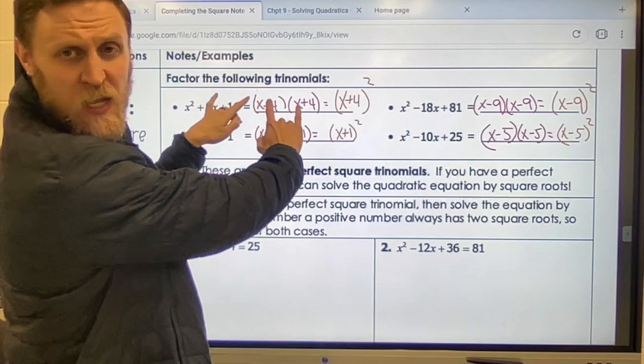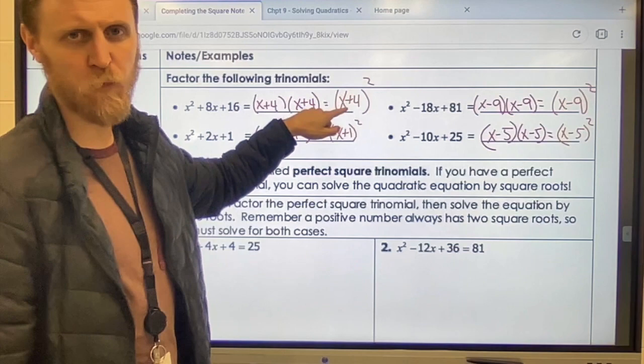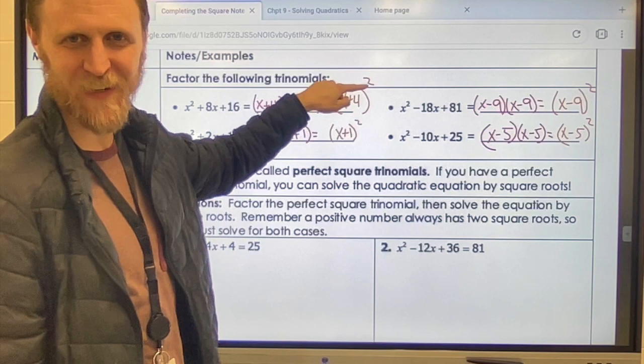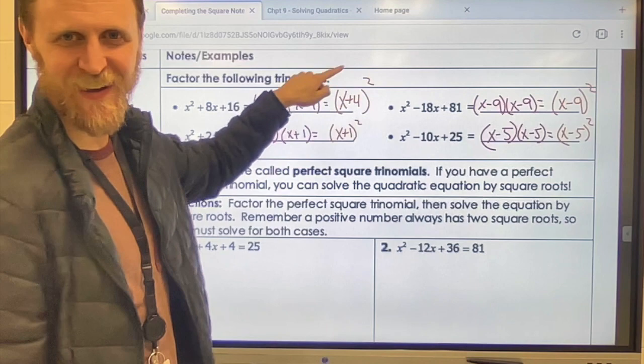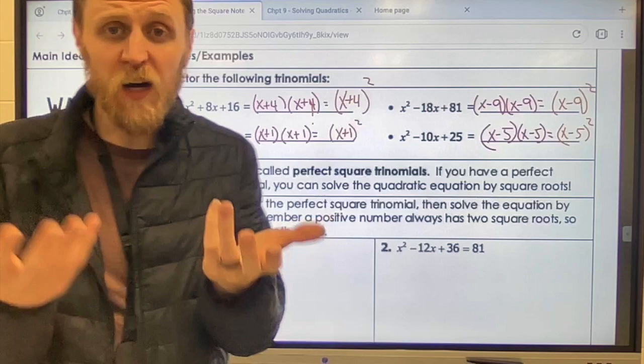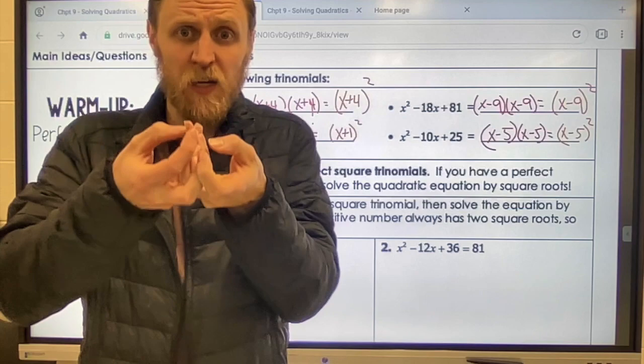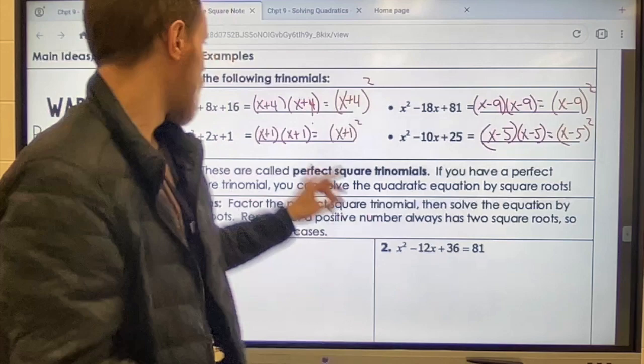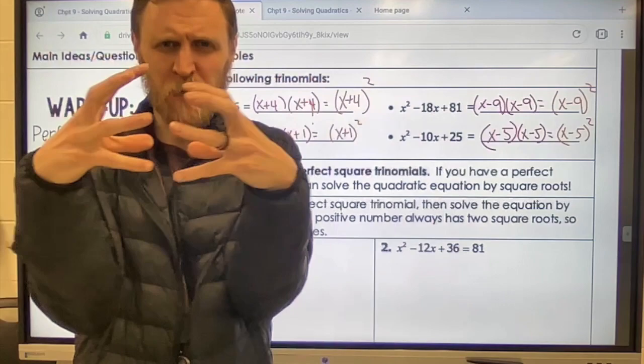What I went ahead and did is I simplified these again because I know that x plus 4 times x plus 4 is the same thing as x plus 4 squared. Anytime we're multiplying something by itself twice, it's the same thing as being squared. You know, like 2 times 2 is 2 squared, 3 times 3 is 3 squared, x times x is x squared, and x plus 4 times x plus 4 is x plus 4 squared. It's a way to kind of simplify that and just push them together.